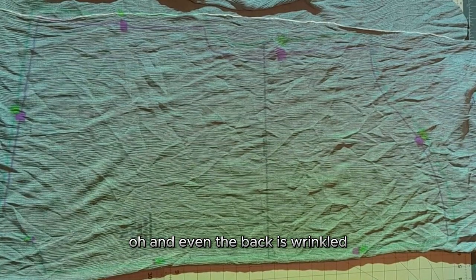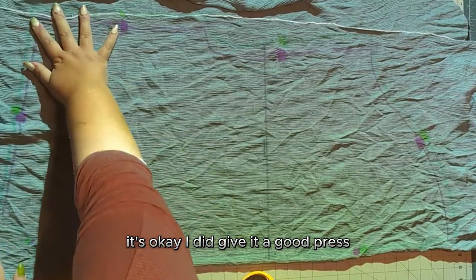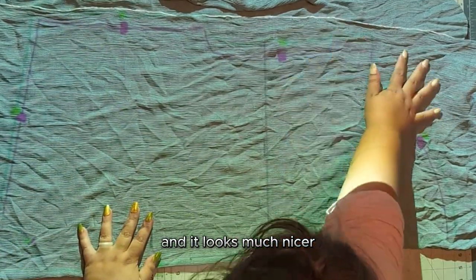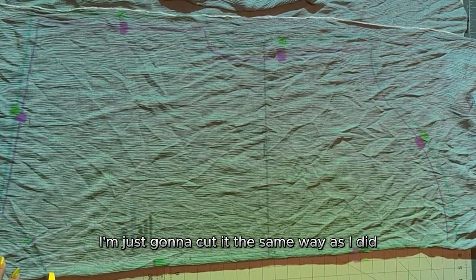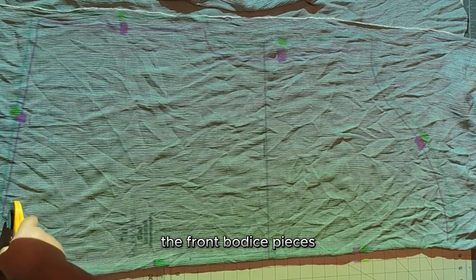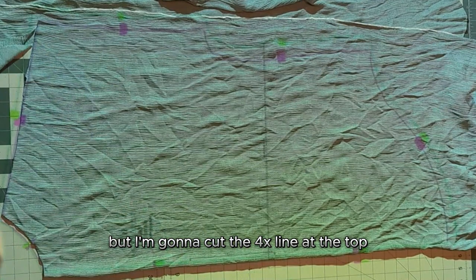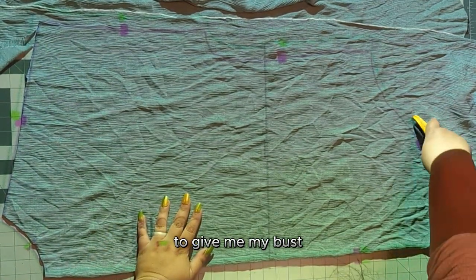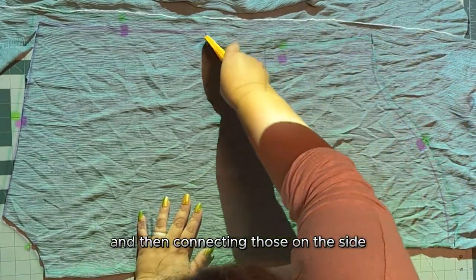And even the back is wrinkled, but it's okay. I did give it a good press when I was sewing it and afterwards, and it looks much nicer now that it's nicely pressed. So here's our back bodice piece. I'm just going to cut it the same way as I did the front bodice pieces. This one is cut on the fold, but I'm going to cut the 4x line at the top to give me my bust at the correct size. And then the 5x at the bottom, and then connecting those on the side.